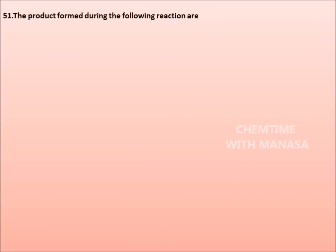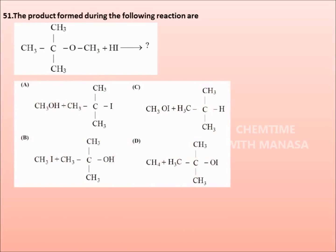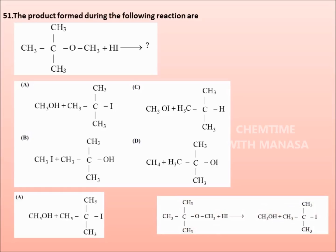Question number 51. The product formed during the following reaction are: (CH₃)₃COCH₃ + HI. The options are: CH₃OH + (CH₃)₃CI, CH₃OI + (CH₃)₃CH, CH₃I + (CH₃)₃COH, CH₄ + (CH₃)₃COI. The correct answer is option A: CH₃OH + (CH₃)₃CI. The reaction is: (CH₃)₃COCH₃ + HI gives CH₃OH + (CH₃)₃CI.